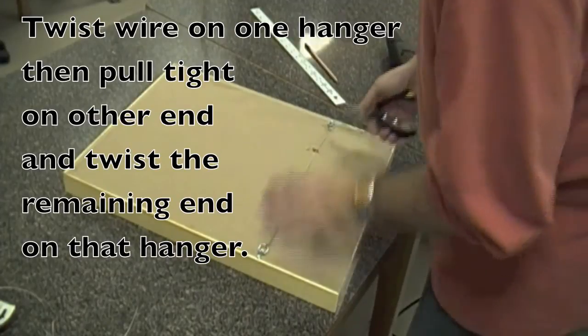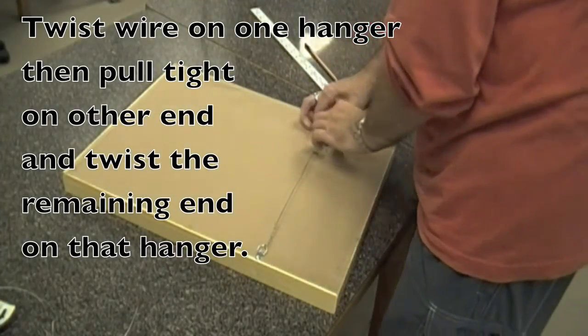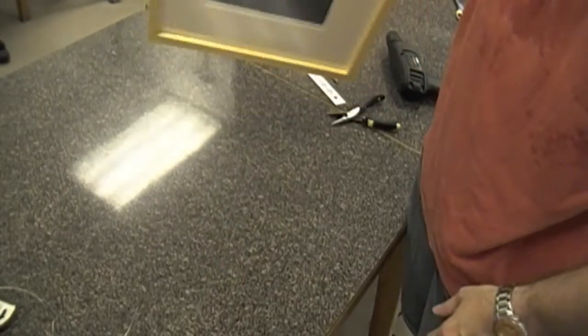So you'll screw that into each side and then you'll get your piece of wire and cut that to size. Twist it on one end, pull it very tight on the other end and then twist it again. And then the piece is finished and ready to hang.